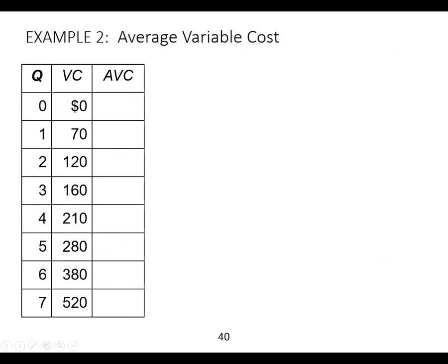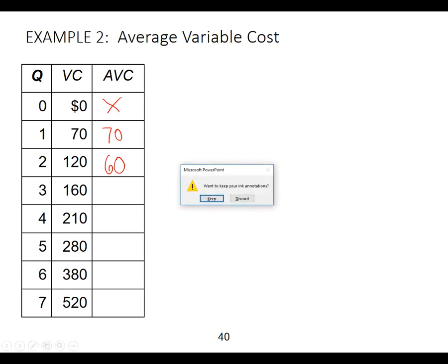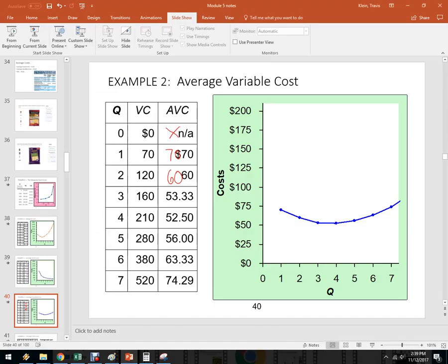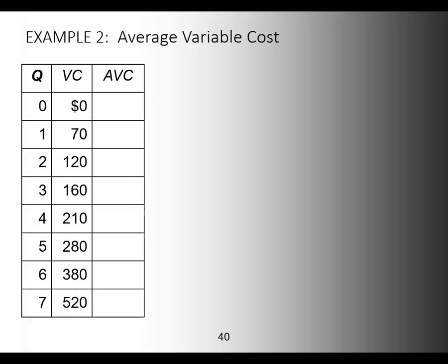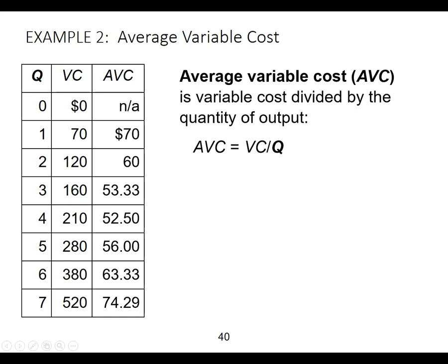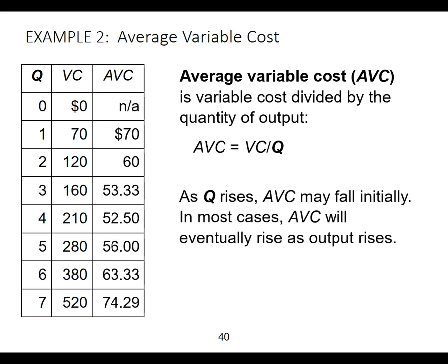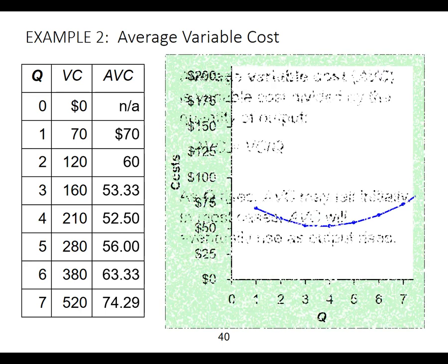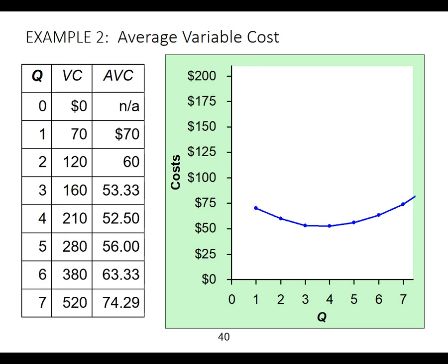Next, average variable cost. We don't care about zero. 70 divided by 1 is 70. 120 divided by 2 is 60. It's variable cost over quantity. What we notice is average variable cost decreases up until we hit diminishing marginal returns, which here is at unit 4. So after unit 4, it starts to get more expensive. It's going to look like a curve with a minimum, and that minimum is important.